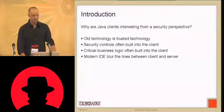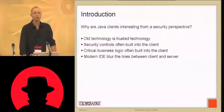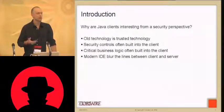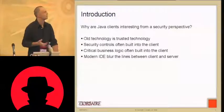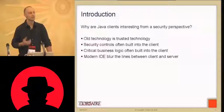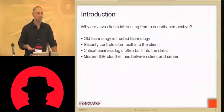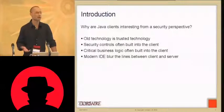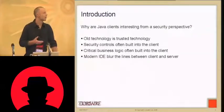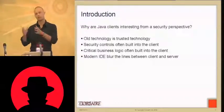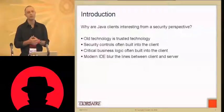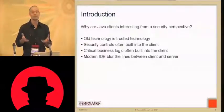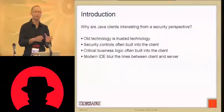Java is the new COBOL — it's a boring, old technology. And it's precisely because it's such a stable technology that financial institutions and conservative organizations that don't want to be at the bleeding edge stick to using Java clients. We see a lot of Java clients still in banking applications, trading applications, and commercial banking. What's interesting from a vulnerability point of view is that security controls are often built into the client side instead of the server side — it's easy for developers to make the mistake of putting trusted code on the client side.